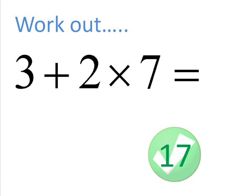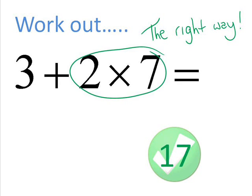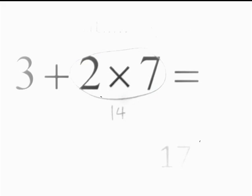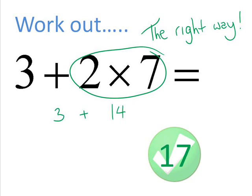Now, if you got the answer of 17, this is probably the way you would have done it. And this would have been the right way of doing it. First off, you would have gone 2 times 7. 2 times 7 gives you 14. This leaves you with 3 plus 14. 3 plus 14 gives you 17.